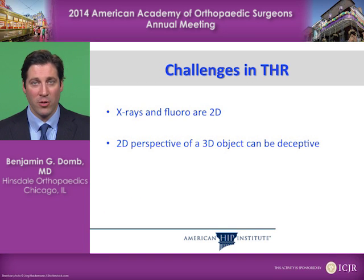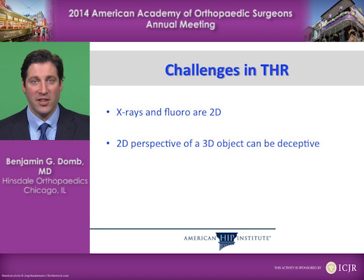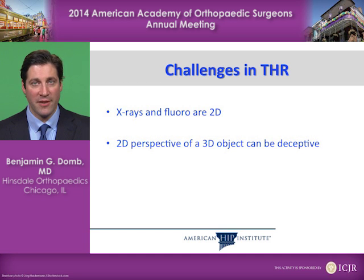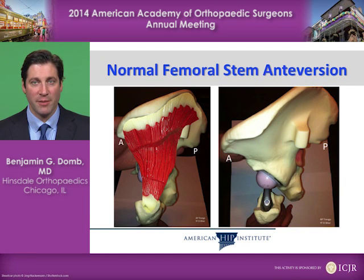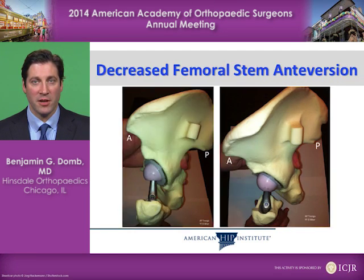X-rays and fluoroscopy are both two-dimensional instruments, and a two-dimensional view of a 3D object can be deceptive. I'll demonstrate some ways it can be deceptive with respect to femoral anteversion. If you change the femoral stem anteversion, you change the relationship of the gluteus medius and other muscles around the hip to the pelvis.